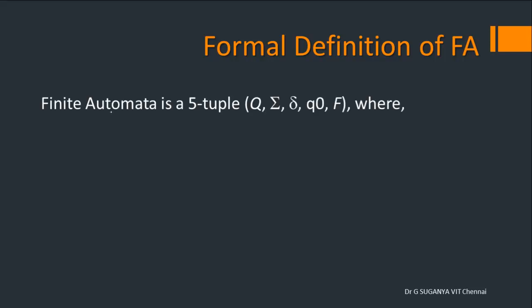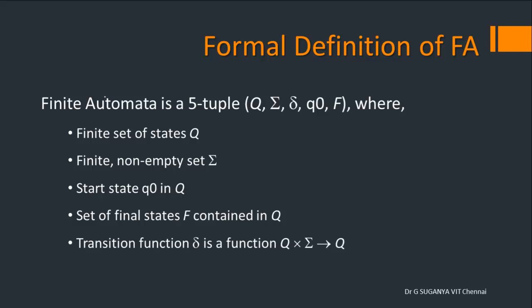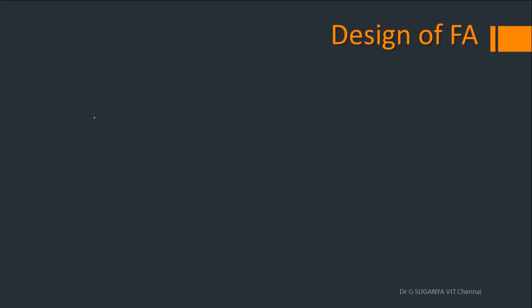Just for a quick recap, finite automata is represented as a five-tuple: Q, sigma, delta, Q0 and F. Q represents the set of states. Sigma represents the finite set of input symbols permitted in the language. Q0 is a special start state designated from Q. F is the set of final states, which is a subset of Q. The transition function delta is formally represented as Q cross sigma gives Q, defining where the system moves from a state on a particular input symbol.